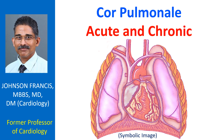Chronic obstructive pulmonary disease is the most common cause of cor pulmonale mainly because of its frequency. But more severe pulmonary hypertension may be noted in interstitial lung disease with idiopathic pulmonary fibrosis. Acute cor pulmonale usually occurs in the setting of acute pulmonary embolism.